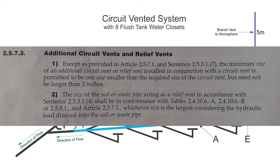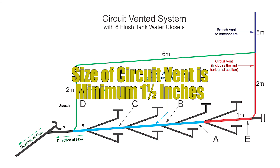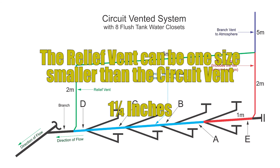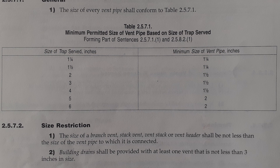Except as provided in article 2-5-7-1 and sentence 2-5-3-1-7, the minimum size of an additional circuit vent or relief vent installed in conjunction with a circuit vent is permitted to be one size smaller than the required size of the circuit vent, but need not be larger than 2 inches. We've determined our circuit vent is 1-and-a-half inches, so one size smaller would be 1-and-a-quarter inches. But this clause also directs us to reference clause 2-5-7-1, which tells us to look at table 2-5-7-1.